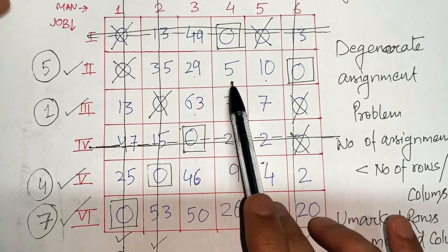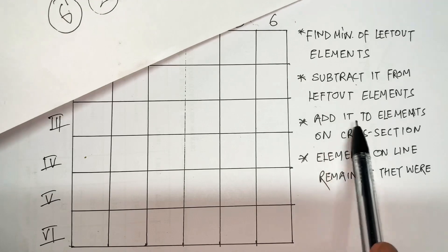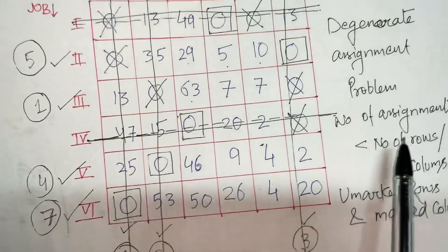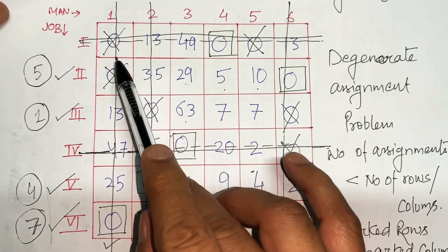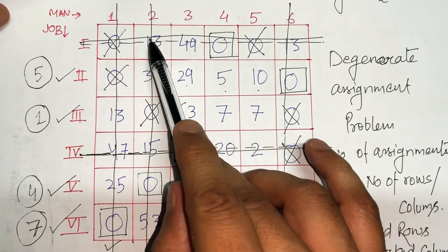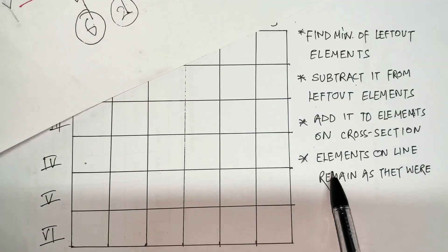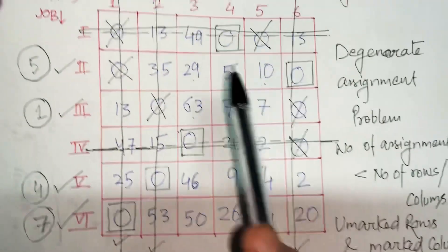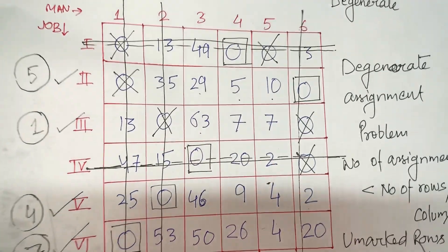4 subtracted: 5 minus 4 is 1, 10 minus 4 is 6. Then, add the minimum to the elements on cross-sections — so any element on a cross-section gets 4 added to it. And elements on the line remain as they were, so 49 is on-line and will remain as it is in the new table.